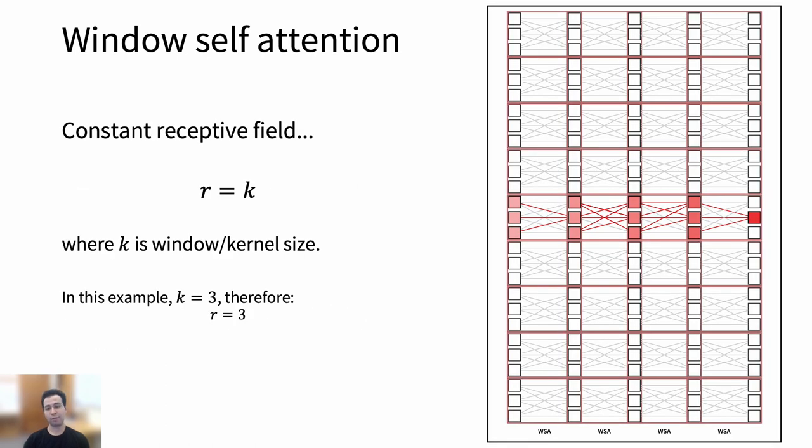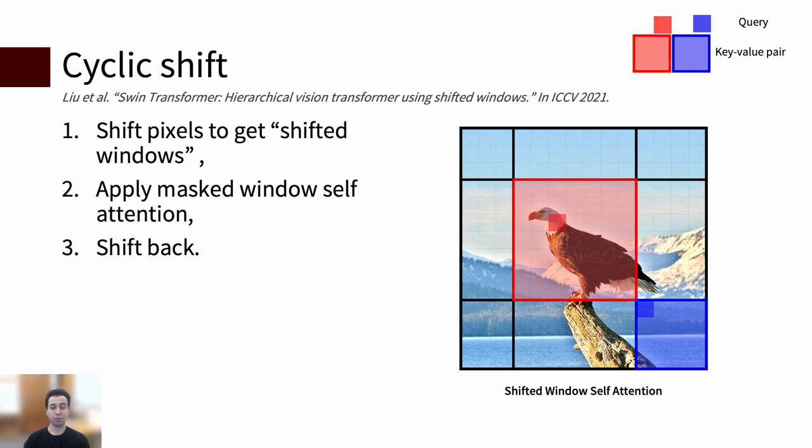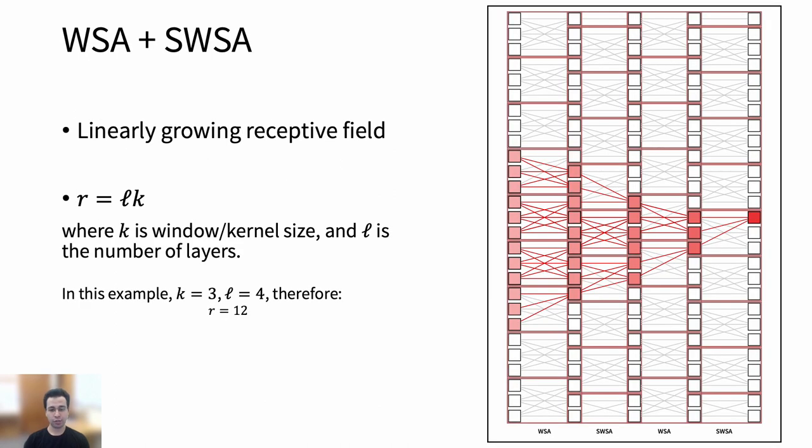However, on its own, it prevents the receptive field from growing. That's why SWIN authors propose to alternate between it and a shifted variant dubbed shifted window self-attention. The combination of the two allows the receptive field to grow linearly again.